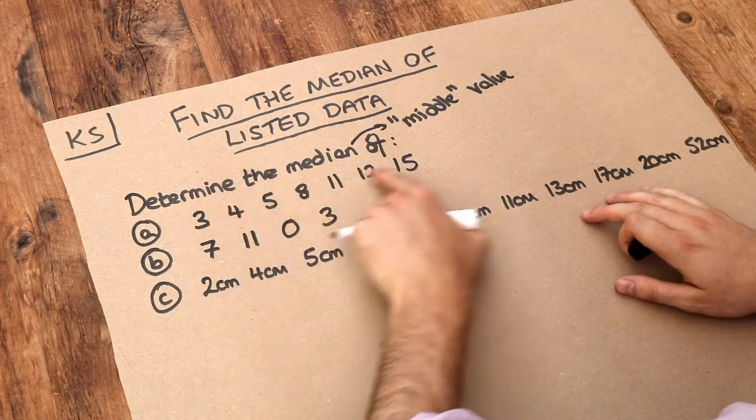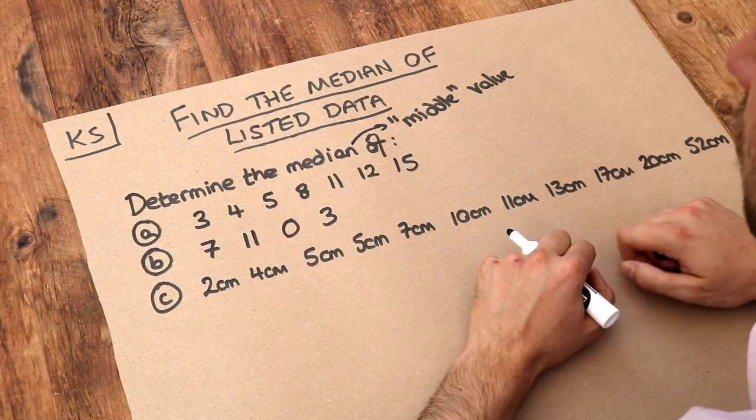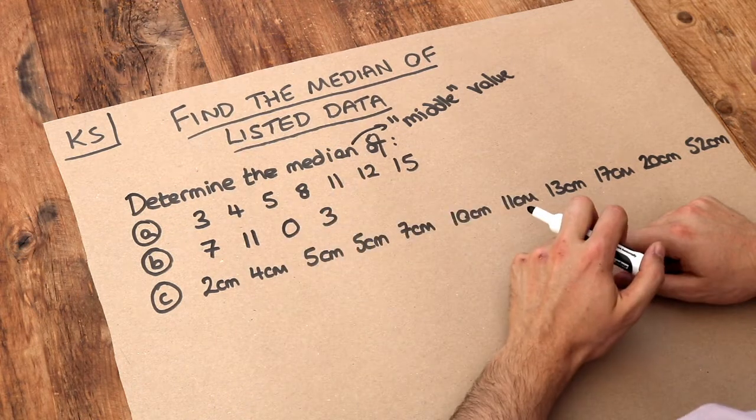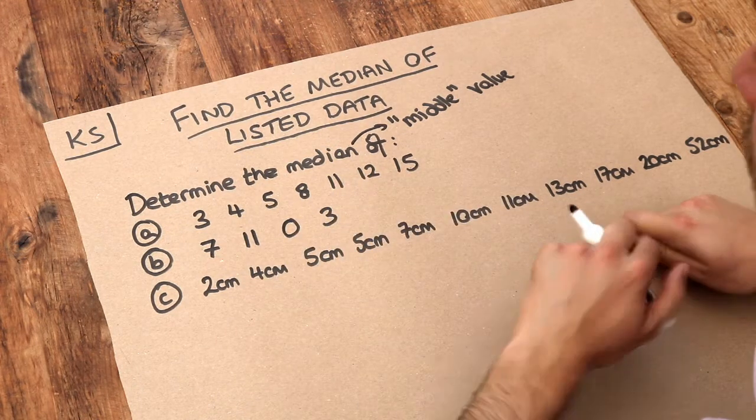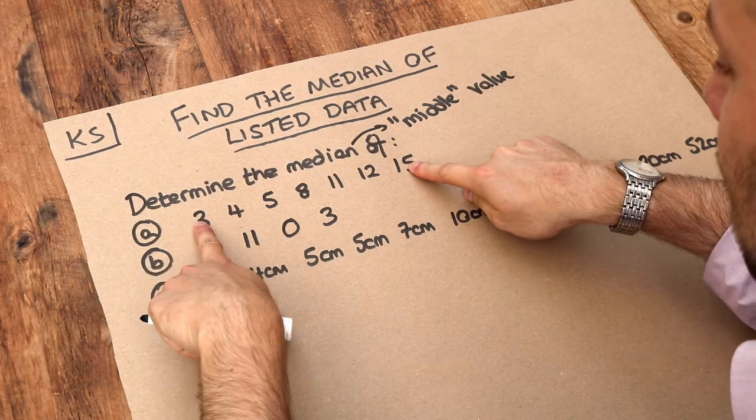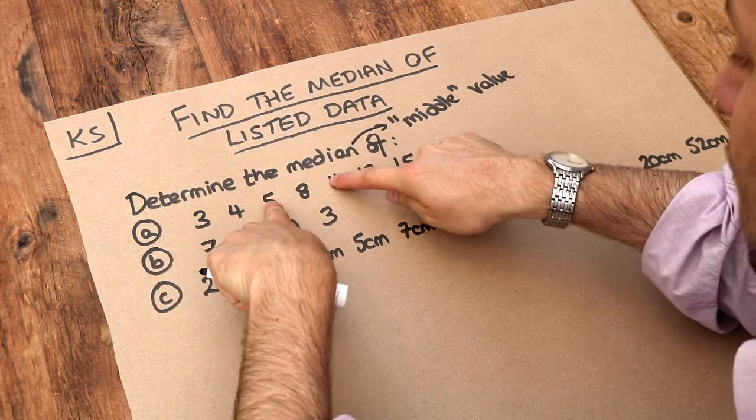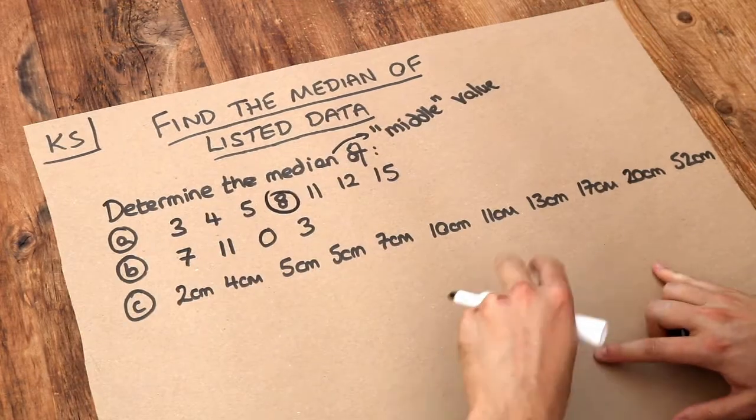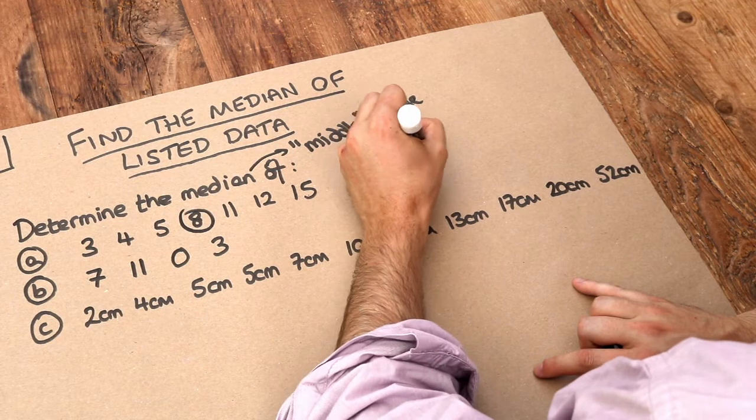Now if you want to find the median of this data here, this one's relatively easy because the data is already in ascending order and it's quite easy to see what the middle value is. We could count inwards from the two ends, count inwards, inwards, inwards, and we can see that 8 is the middle value and therefore the median is 8.